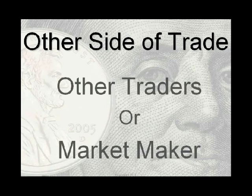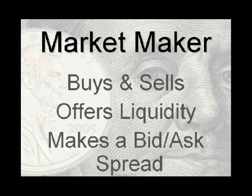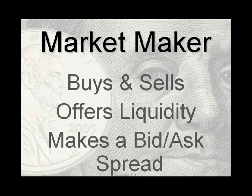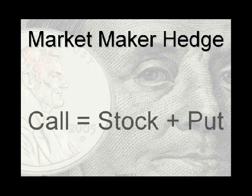When we buy an option, somebody has to sell it to us — that will either be another trader or possibly a market maker. As a trader, you can imagine someone sitting at a computer like you, making a decision and taking the opposite side of your trade. I want to focus more on market makers. Market makers make their living buying and selling options; they typically have a seat on the exchange. They offer liquidity by making a bid-ask spread — willing to buy from us at bid and sell to us at ask, trying to make the difference between bid and ask.